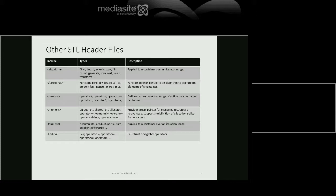The utility header you almost never have to include explicitly because it's included by almost all the other headers. Pair is there, so if you're using sets, maps, or unordered containers, you've got pair because they included utility.